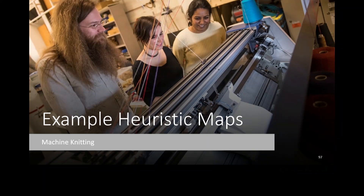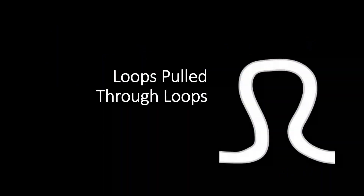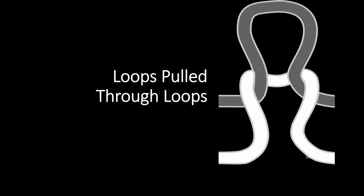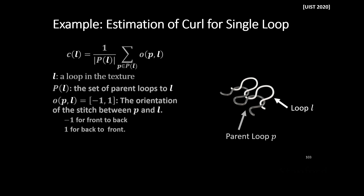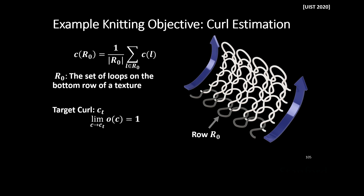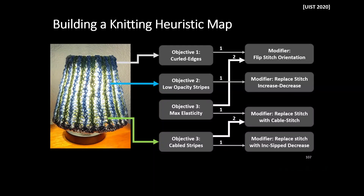In the machine knitting domain, we build a heuristic map to control physical properties of fabrics. Each knitted loop is innately unstable — pull two ends and it becomes a strand of yarn — but pulling another loop through stabilizes it, building fabric from that component. The direction you pull loops through determines a predictable curl which accumulates across an entire pattern, determining overall fabric curl. We measure this as an objective and create modifiers by changing stitch directions to control properties like stretch. Mixing different stitch patterns together creates a heuristic map producing specific objects with controlled properties — like this lacy lampshade.